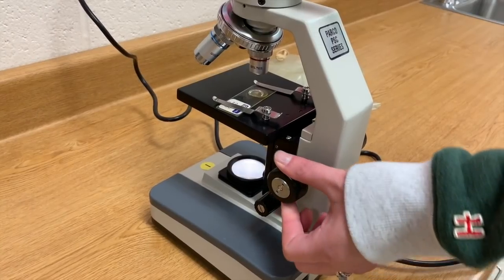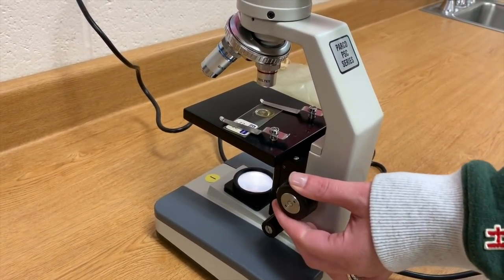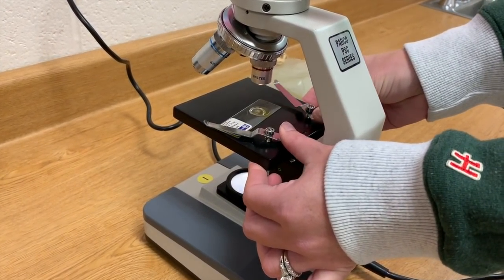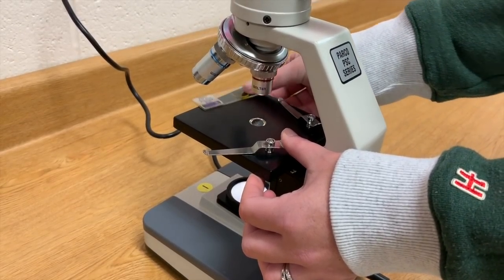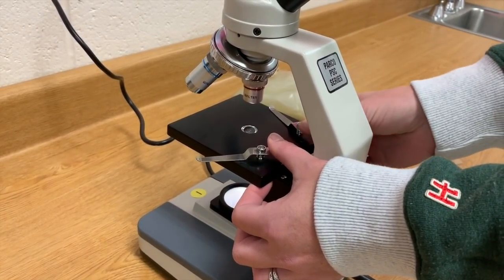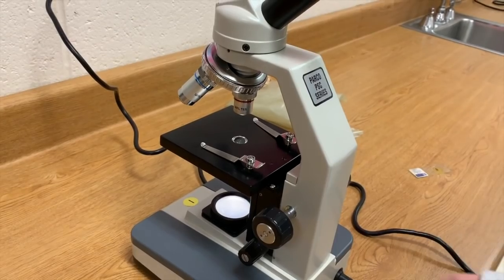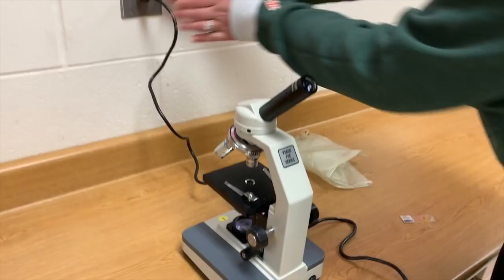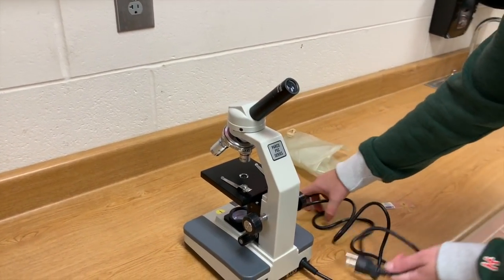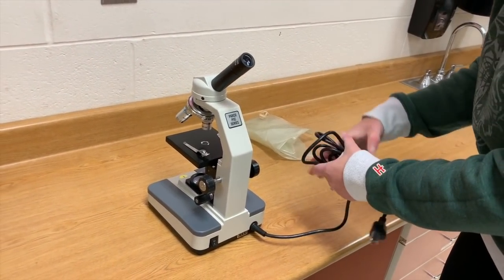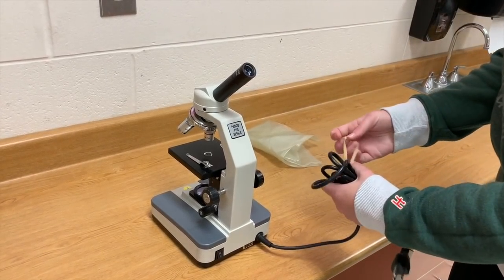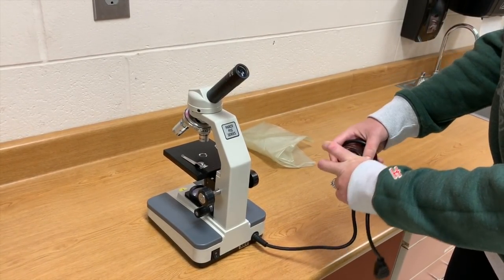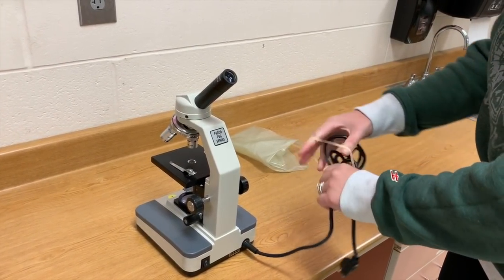We're going to remove our stage clips, slide out our slide, replace those stage clips, turn out our light, unplug it, wrap up that cord with a rubber band, and replace the dust cover. Congratulations, you have successfully used the microscope!